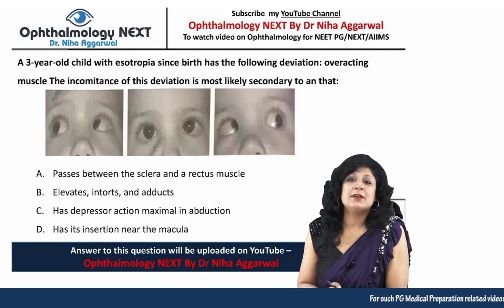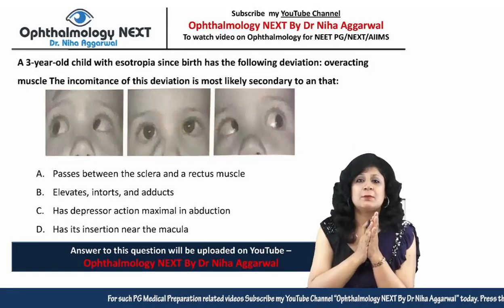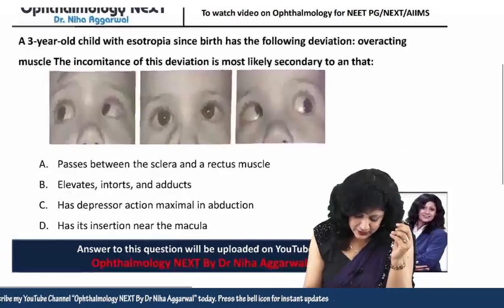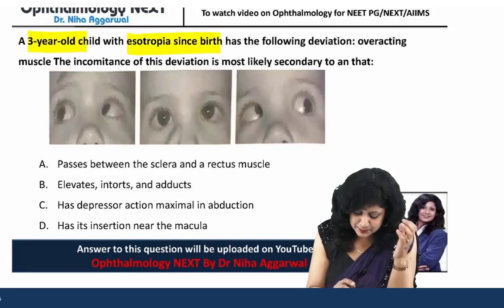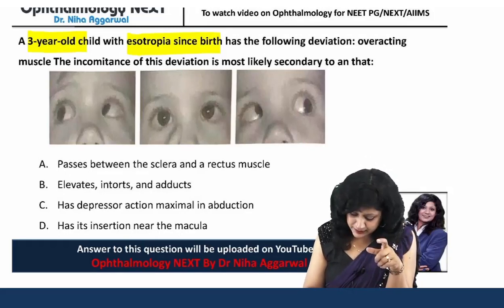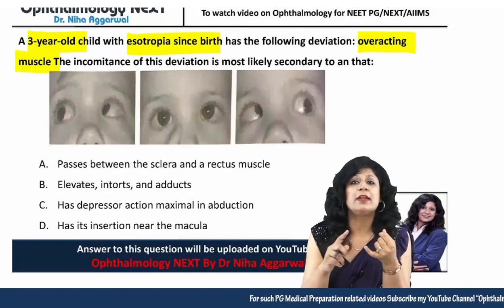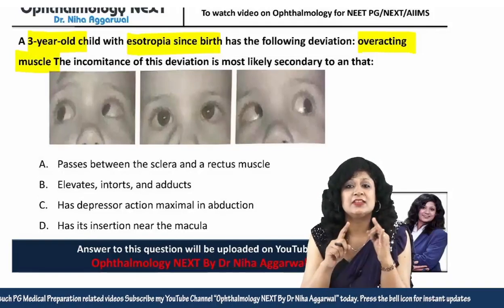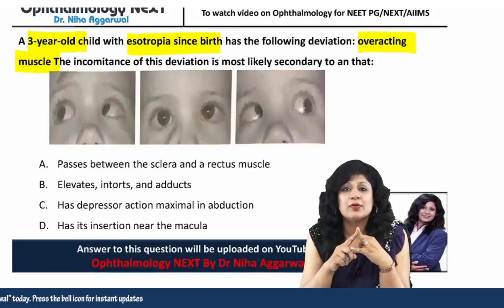Hello guys, welcome to the NEET PG 2021 pattern MCQs. This is another MCQ from my recent quiz that you wanted a video explanation for. We have a three-year-old child with esotropia since birth, presenting with an overacting muscle.